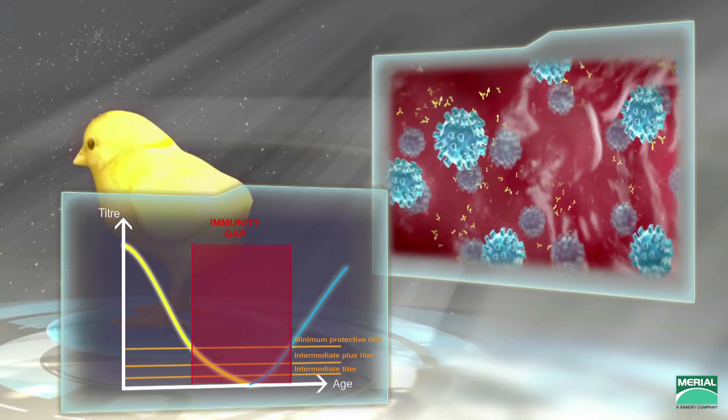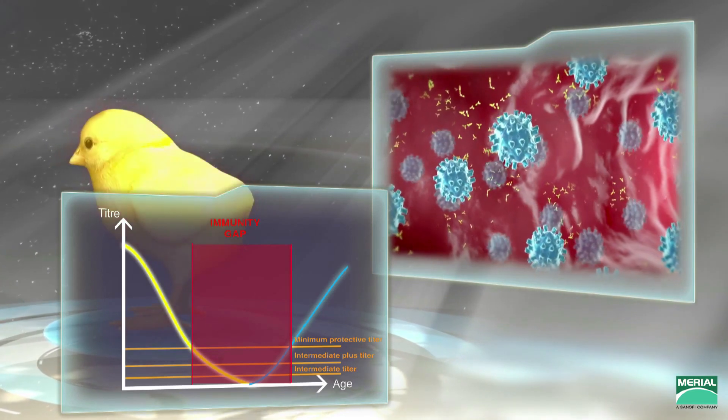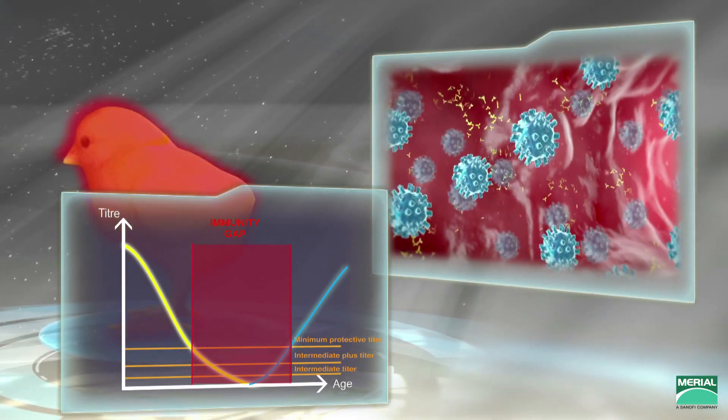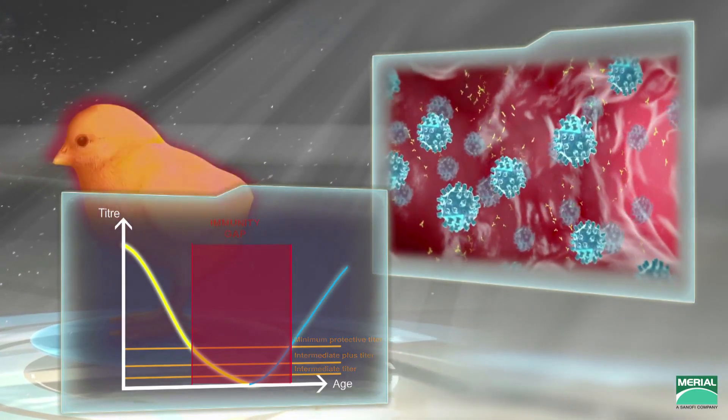There is a period of vulnerability to virulent IBD, at which the IBD antibody titer is below the protective level. This is called the immunity gap, which is shorter for the intermediate plus vaccine.